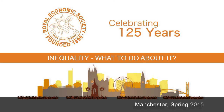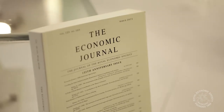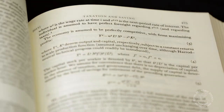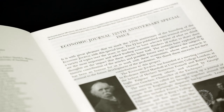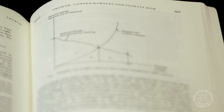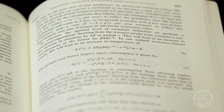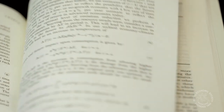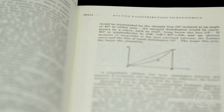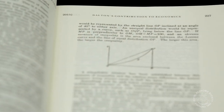This year we're celebrating the 125th anniversary of the Economic Journal, one of the oldest economic journals in the world. What we really wanted to do with this anniversary issue was to celebrate the breadth and depth of topics that had been covered in the journal and the relevance they had to today's policy debate. Dalton's 1920 paper really was one of the first papers to provide an economic foundation to the analysis and measurement of inequality.